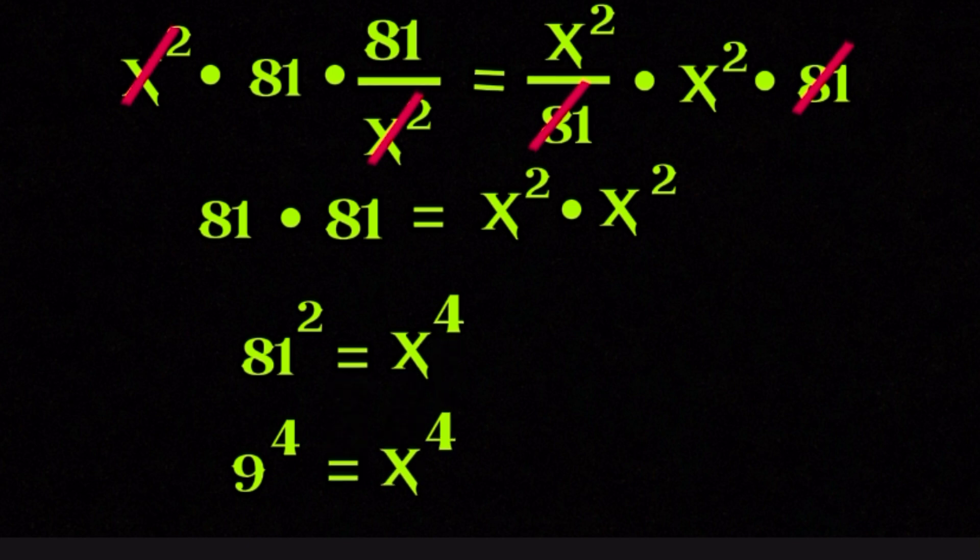And now something very important happens here. If two numbers raised to the same power are equal, then the bases themselves must be equal in magnitude. This tells us that x must be either positive 9 or negative 9, because both positive 9 and negative 9, when raised to the fourth power, give the same result.